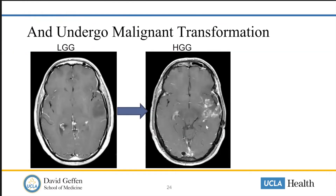At some point, many of them undergo malignant transformation where they are no longer a grade-2 indolent-type tumor, but take on many of the features — histologically, radiographically, and clinically — of high-grade gliomas with rapid growth and poor prognosis.